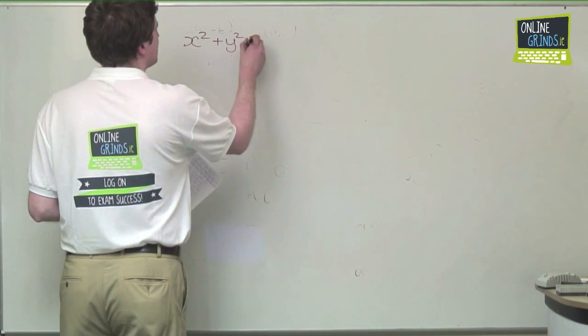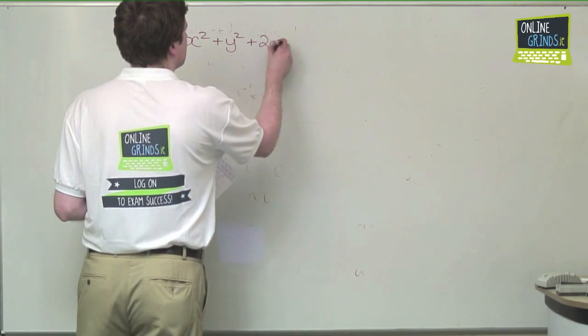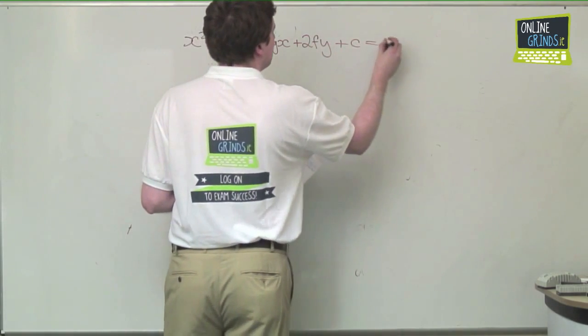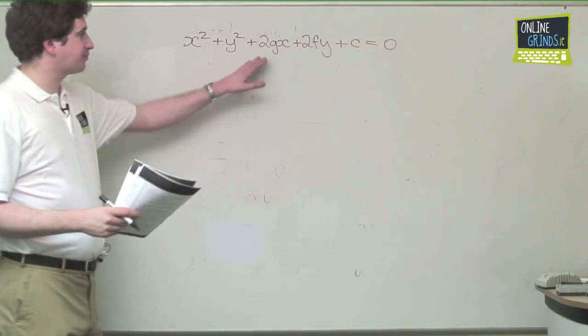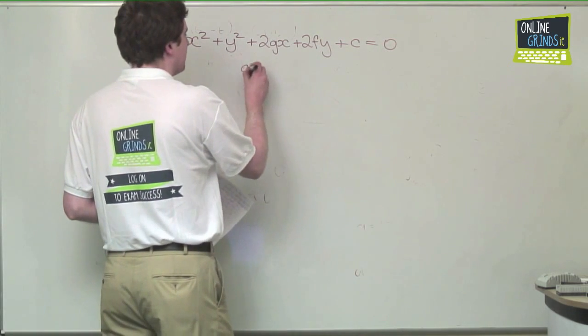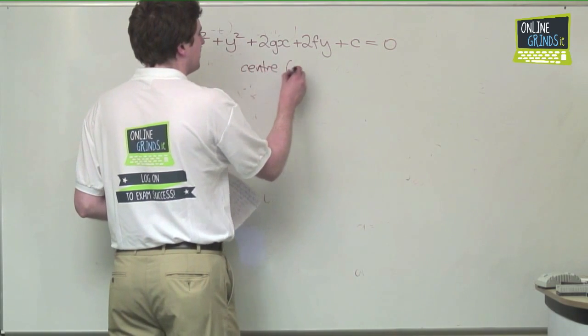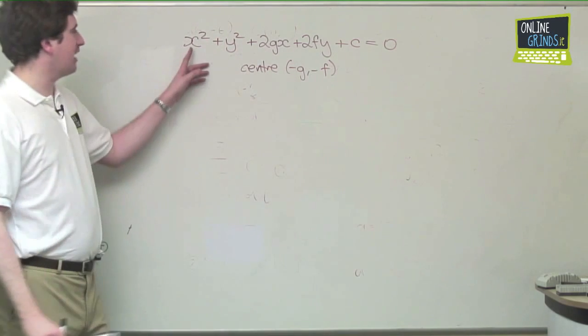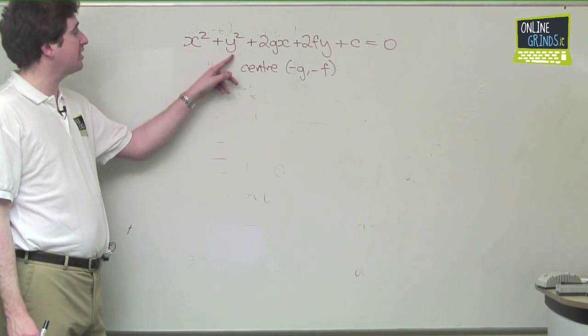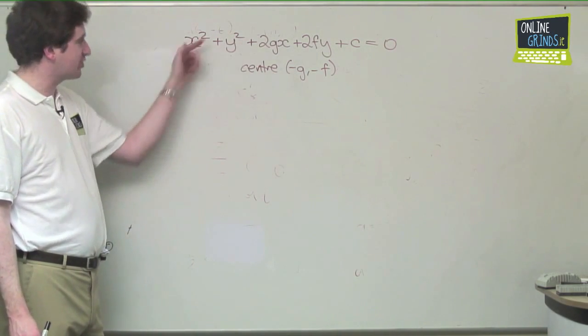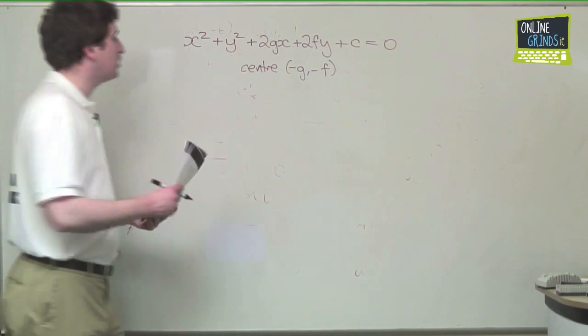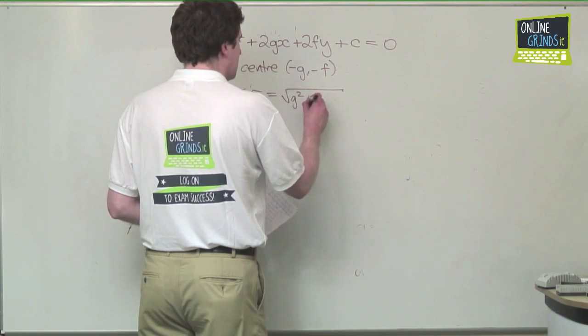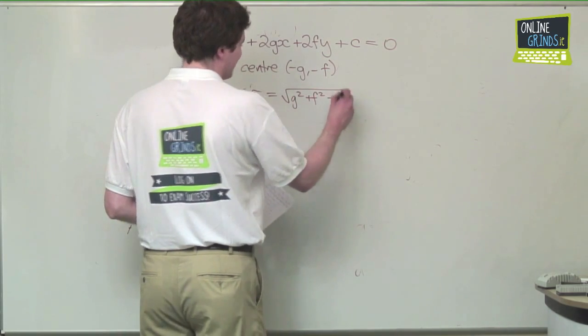Now there are two ways you can write the equation of a circle. One is like as follows, where you have centre minus g minus f. Every formula of a circle must have a single x squared term, a single y squared term, no cross term involving x and y, and the radius in this instance is the awkward looking g squared plus f squared minus c.